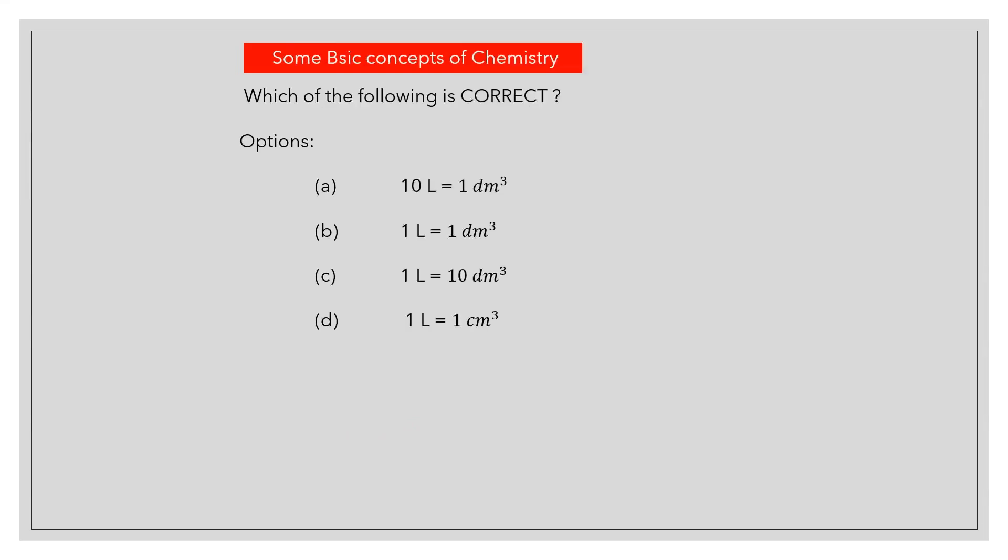Which of the following is correct? Correct answer: B, 1 liter is equal to 1 dm cube.